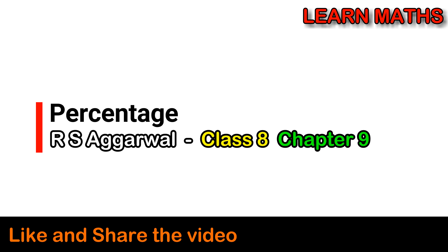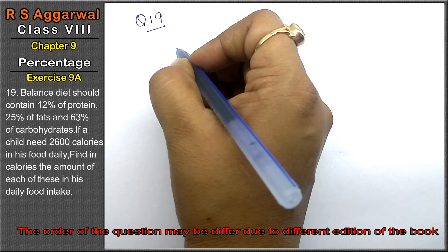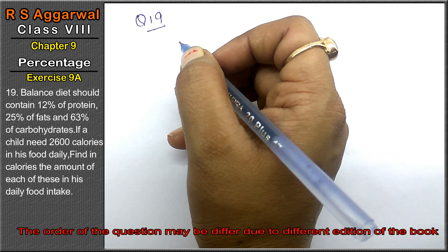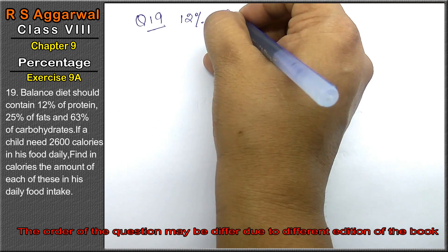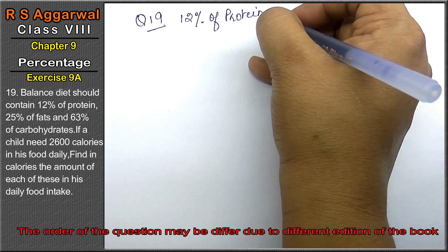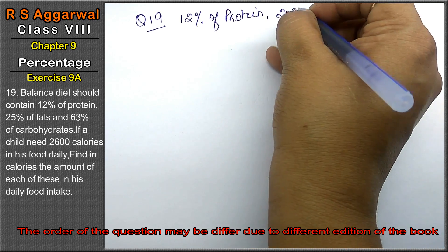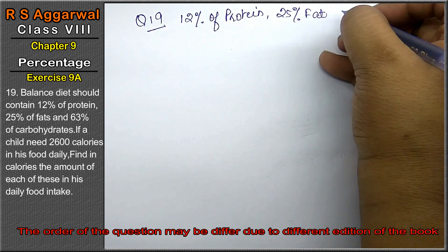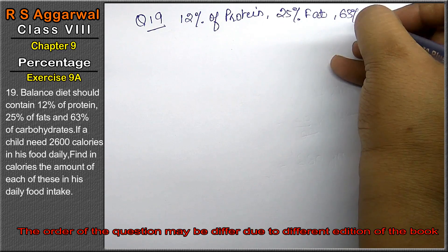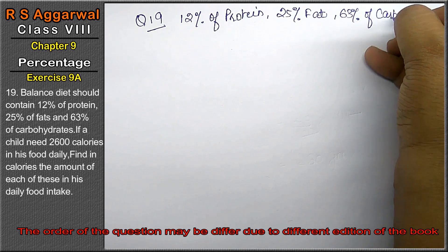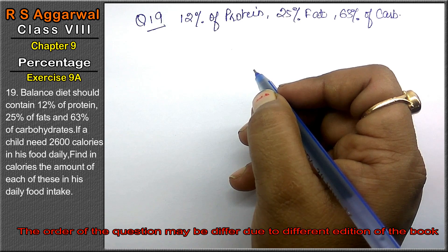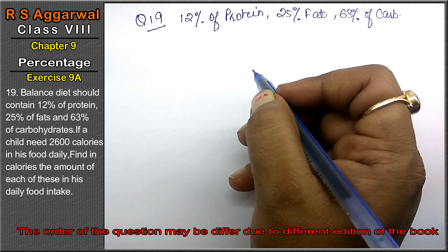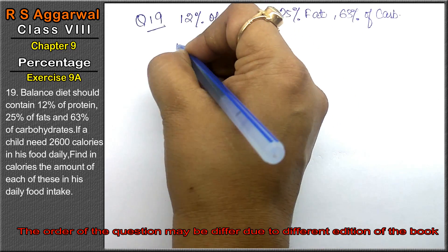Let's do question number 19 of exercise 9A, that is a percentage question. Question number 19: a balanced diet should contain 12% protein, 25% fat, and 63% carbohydrate. If a child needs 2600 calories in his food daily, find the amount of each of these in his daily food.